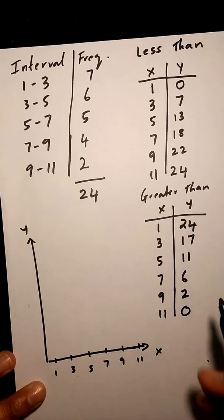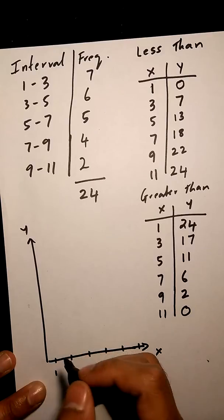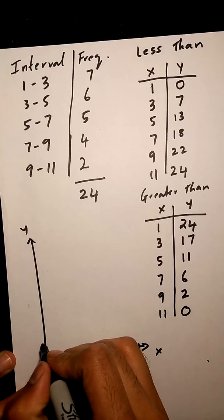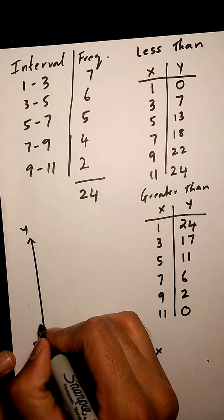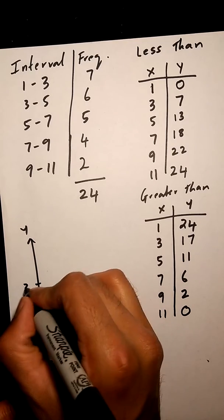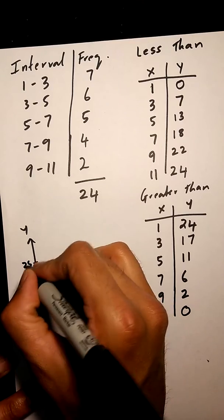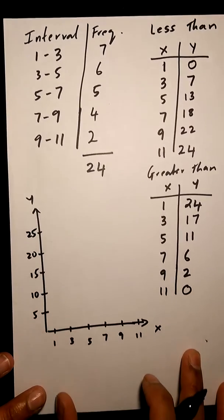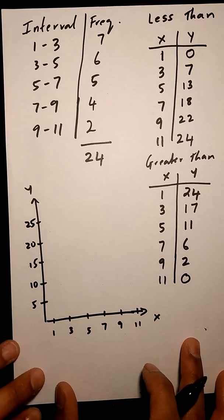Now y values have to go up to 24. Probably going to make them 5's. Once we have this here, I am just labeling points.